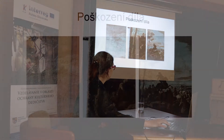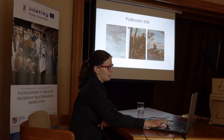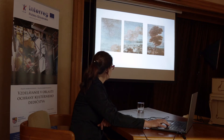Vlevo vidíte detail malby v oblacích, kde byly různé přemalby, různé nové zásahy, nové vrstvy, tmely, které nebyly úplně vhodné – oddělovaly se od podkladů, byly velmi tvrdé, takže poškozovaly tu malbu i mechanicky. Jsou tam různé krakely, zažloutlé laky, samozřejmě depozit. Byla tam aktivní plíseň, takže i spory plísní.